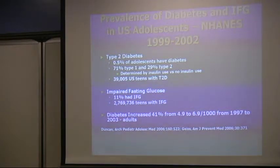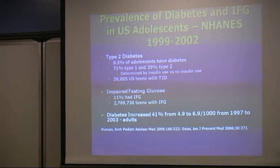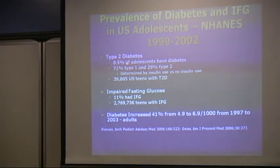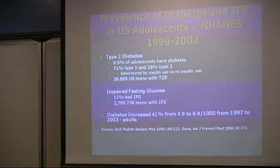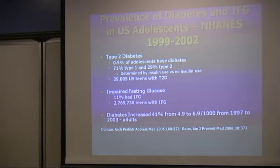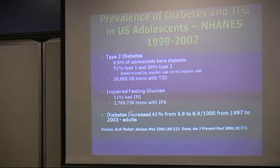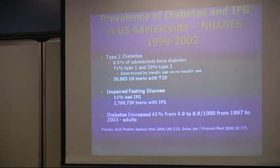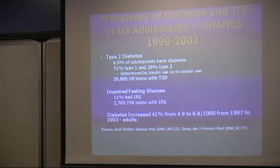Expressed in percentages, type 2 diabetes was estimated at 0.5 percent, and impaired fasting glucose was found in 11 percent of the people who underwent this investigation.